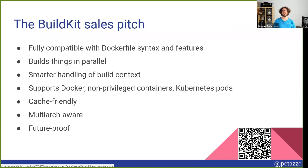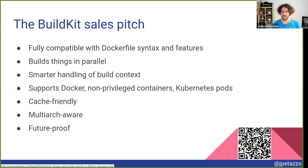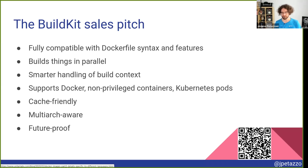The big selling points of BuildKit: first, full compatibility — you don't need to rewrite or even adapt your Dockerfiles. There is parallelism — I will show some demos of that. There is also better handling of the build context. As I was telling you, the ability to build in Kubernetes clusters, support for multiple architectures, and future-proof — that means that BuildKit gives us ways to extend the build process so that new features can be introduced. The output format will be pretty much the same — you still get a regular Docker image, so you can still use them as OCI images.